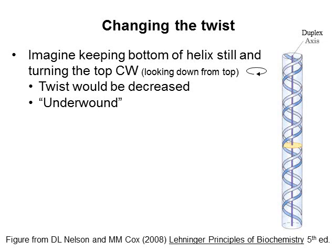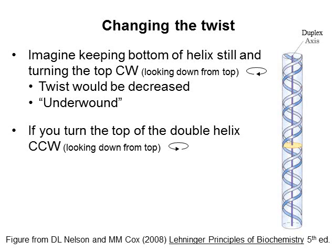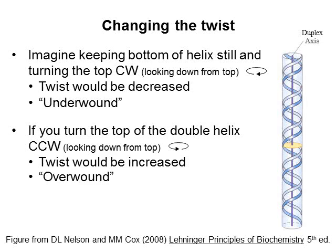Conversely, if you rotate the top of the double helix counterclockwise, each strand would make more complete turns around the duplex axis and the twist would increase — for example, maybe to 6 or 7. The DNA would be called overwound.